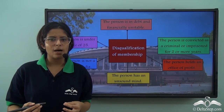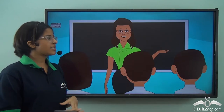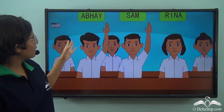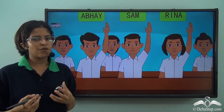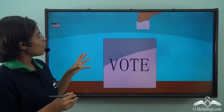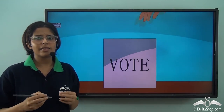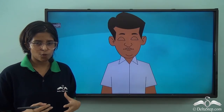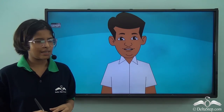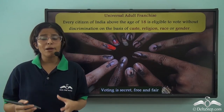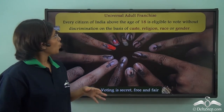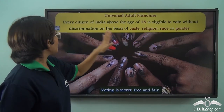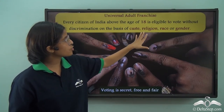This is similar to how a monitor of a class is selected. The teacher asks students if any want to become monitor, and Sam, Abhay and Reena volunteer. All students vote for one candidate each. Abhay gets the majority of votes and becomes the monitor. This reflects the concept of universal adult franchise — every citizen of India above the age of 18 is eligible to vote without discrimination on the basis of caste, religion, race or gender.